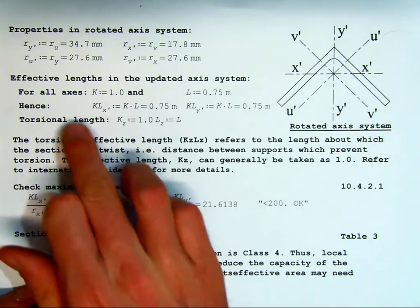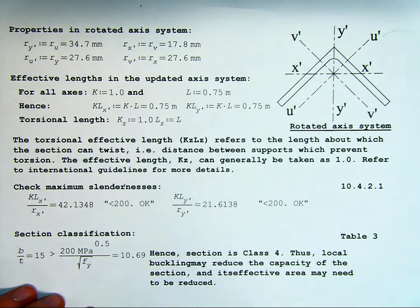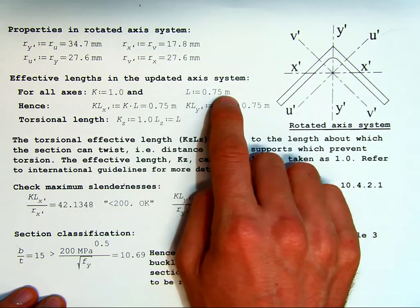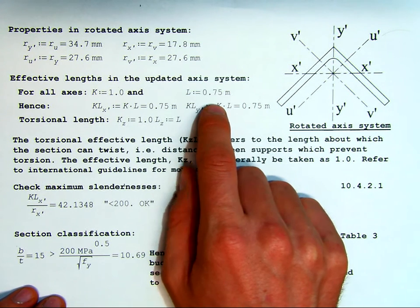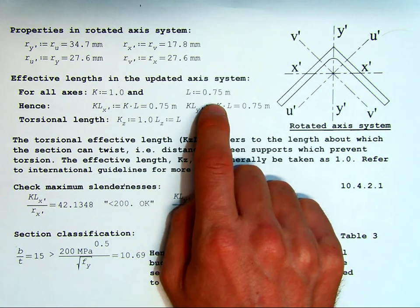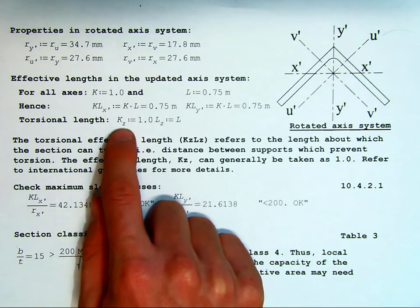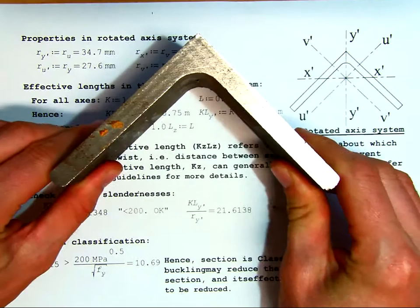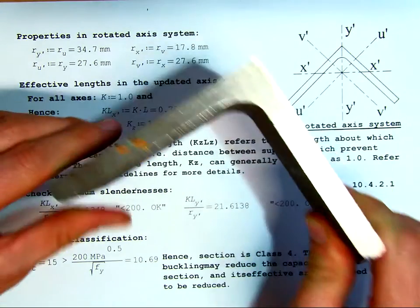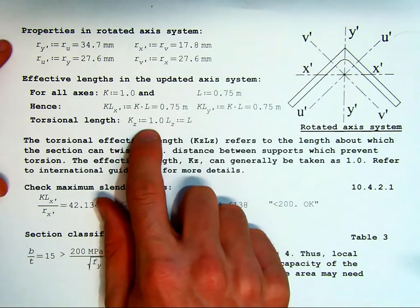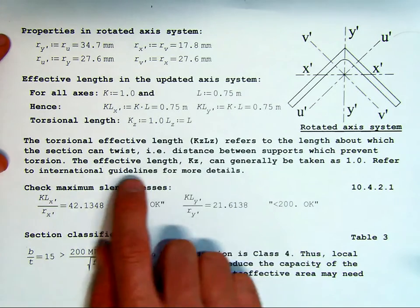First, the effective length in the updated system. For all axes, k is 1. Normally in a truss, we use an effective length of k equals 1 simply because the connections behave as pinned. There are other guidelines available, though, and our L is 0.75 meters. We have been told that above. We could potentially have different effective lengths about the different axes. In this specific example, we're not going to, but in the following example, it will be looked at. Kz is the length along the axis. Torsion is simply to prevent a twist.